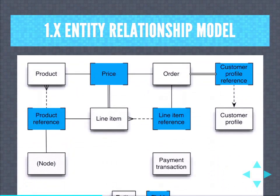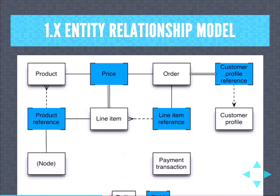We started by reviewing the entity model. Our entity diagram for Commerce 1.x has five entity types: the order, the product, the line item, the payment transaction, and the customer profile. We define a few field types like the product reference field, the customer profile reference field, and the price field. That's all the core of Commerce 1.x defines out of the box.